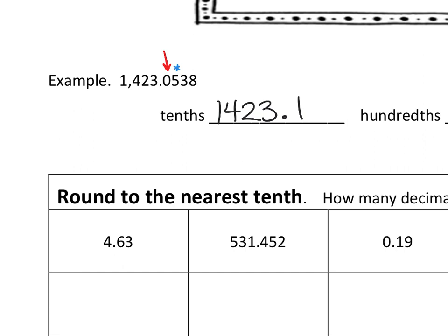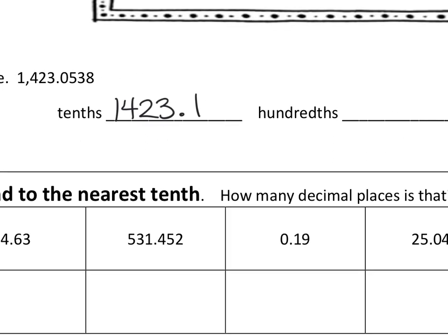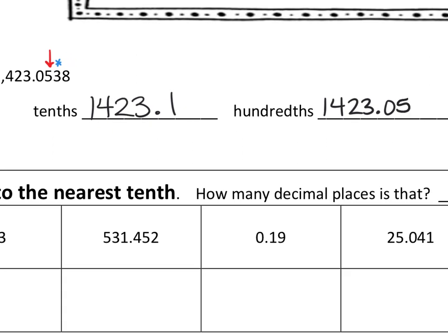If we wanted to round the same number to the hundredths, we want to keep two decimals. So I look at the decimal behind it — next door. Is that one five or more? No. So we don't raise the score. This would be 1,423.05. We do not raise the score; we leave it exactly as it is.